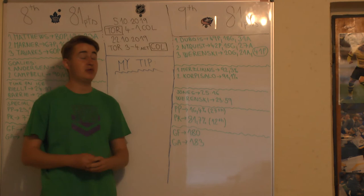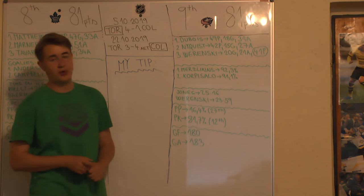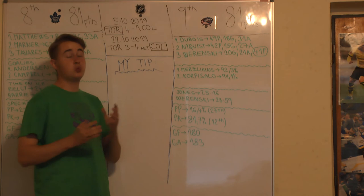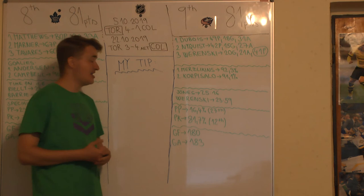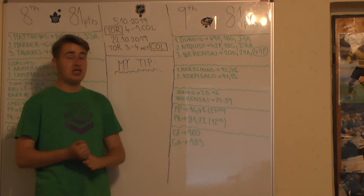Number one goaltender, Elvis Merzlikins, the guy from Latvia, with a gorgeous 92.3% save percentage. Number two, Joonas Korpisalo, with 91.1% save percentage. I believe that Merzlikins would be the starter. He has been playing well this year. Of course, he has not played that large amount of games, but I think he looks to be in good shape. We'll see how he will do in his first playoffs in the NHL, in his career. I'm eager to see how he will do.